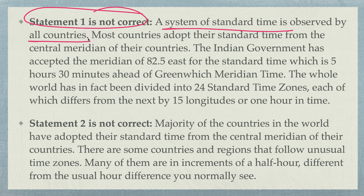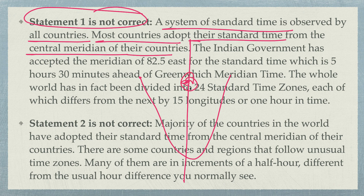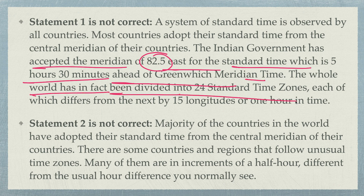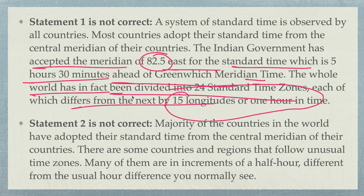You should know what the prime meridian is, which countries it passes near, and that India is 5 hours 30 minutes fast. Most countries adopt their standard time from the central meridian of their countries. The Indian government has accepted the meridian of 82.5° East as standard time, which is 5 hours 30 minutes ahead of Greenwich Mean Time. The whole world is divided into 24 standard time zones, each differing by 15 degrees of longitude or one hour in time.